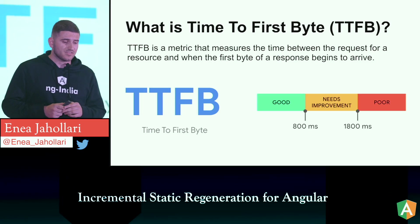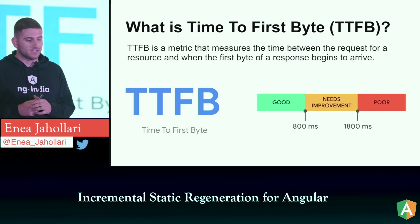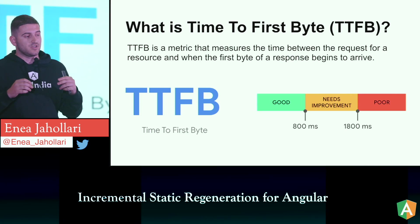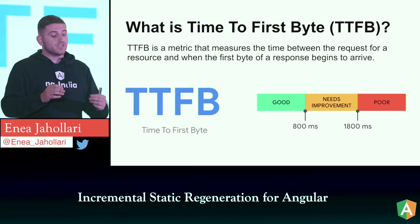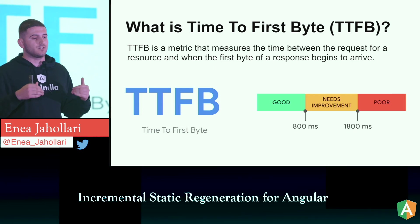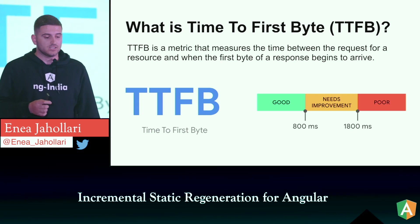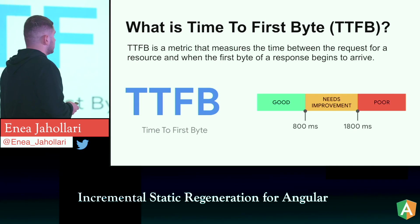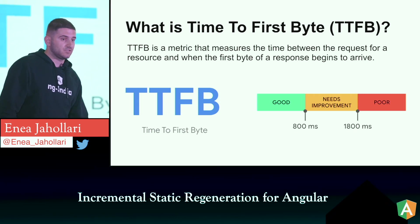That metric is called Time to First Byte (TTFB) — the first thing we mentioned on the first slide. It measures the time between the request for a resource (in our case the document) and when the first byte of that response begins to arrive. A good TTFB is around 800 milliseconds, and a poor one is more than 1,800ms.